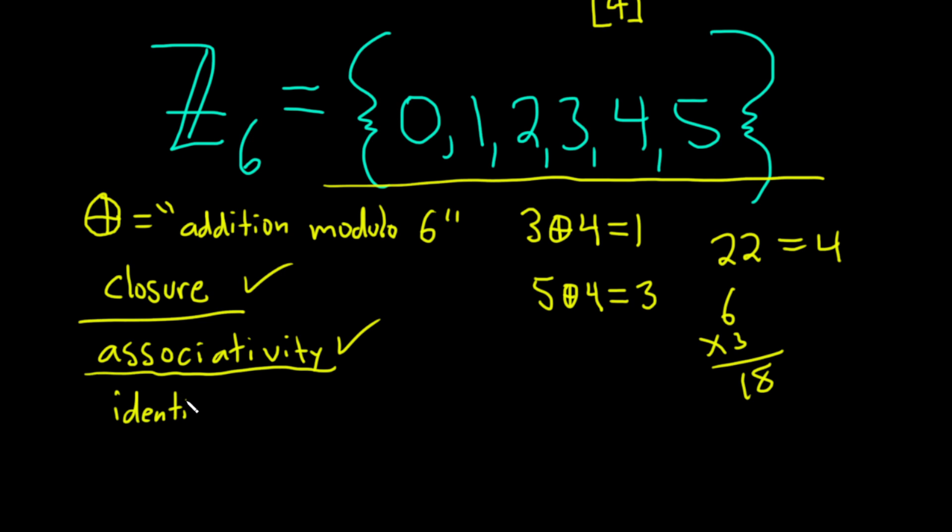The identity element is going to be 0. So the identity is going to be 0 and 0 is an element in this set. And 0 circle plus x is equal to x circle plus 0, which is equal to x, for all x. So this is the identity element in z6. It's going to work for all of these guys, right? No issues, 1 plus 0 is 0 plus 1, et cetera.